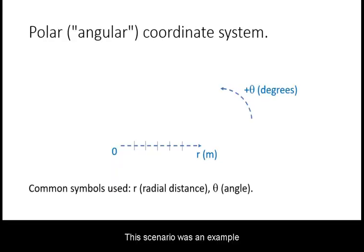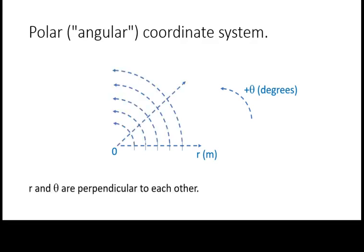This scenario was an example of a polar coordinate system. This is sometimes referred to as an angular, circular, or cylindrical coordinate system. The coordinate directions used this time are radial distance and angle from a reference direction. The symbol for the angle is the Greek letter theta.